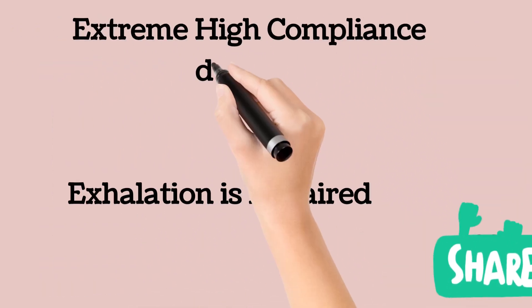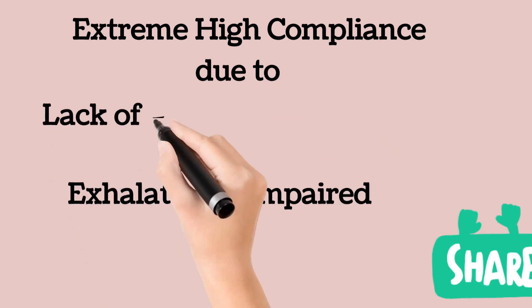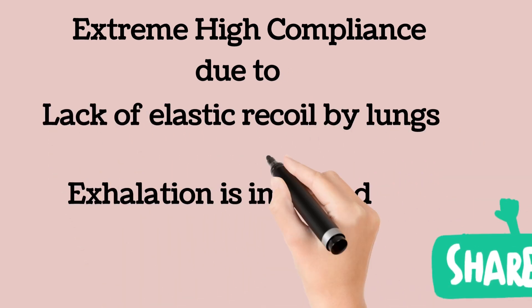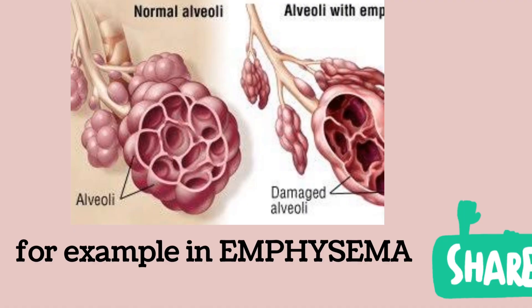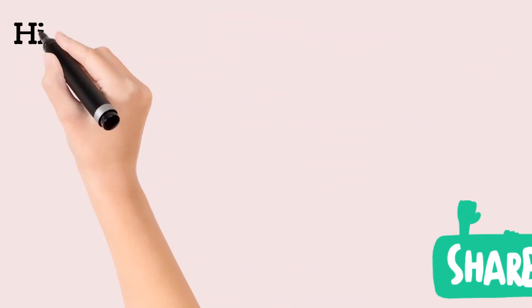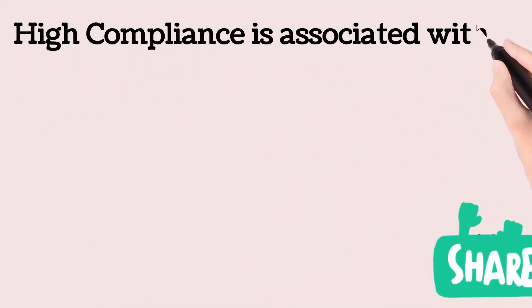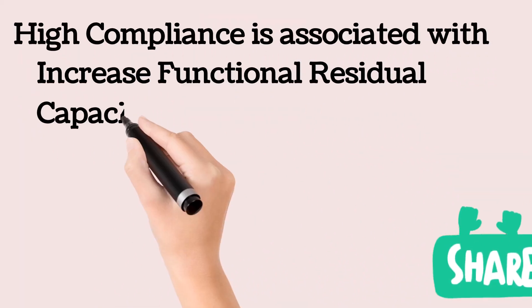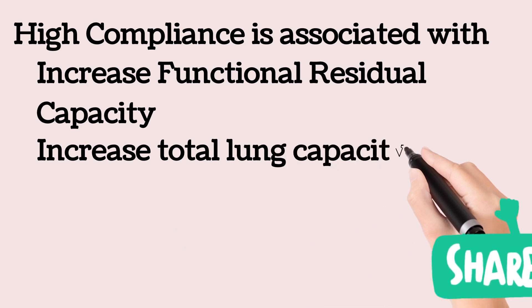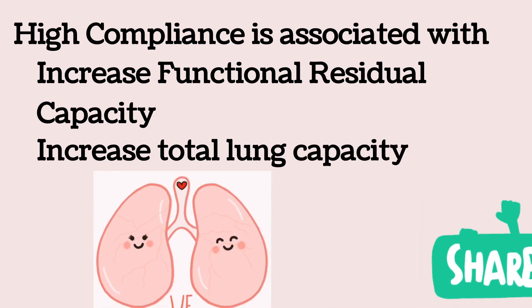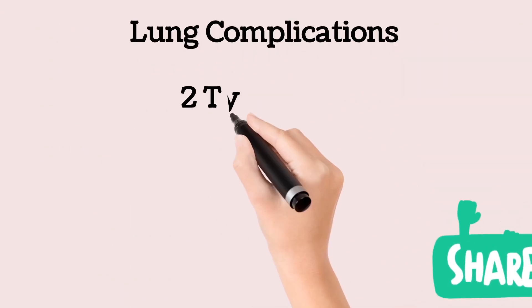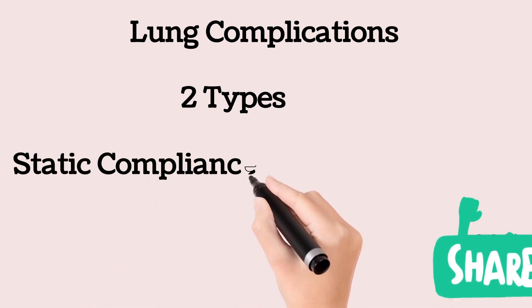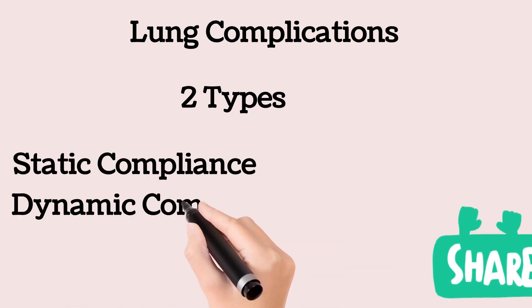In extreme high compliance situations, exhalation is often incomplete due to lack of elastic recoil by the lungs — emphysema, for example. High compliance is often related to conditions that increase the patient's functional residual capacity and total lung capacity. Compliance can be divided into two types: static compliance and dynamic compliance.